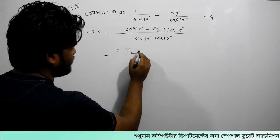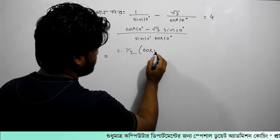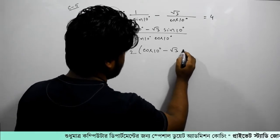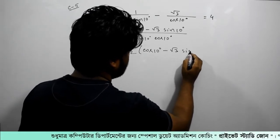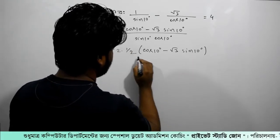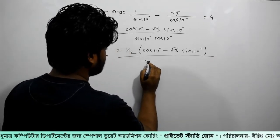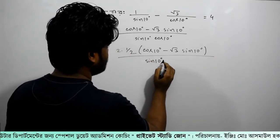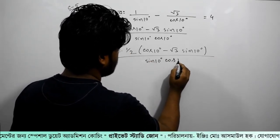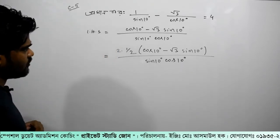How I work with cos 10 degree minus root over 3 sin 10 degree, divided by sin 10 degree cos 10 degree.